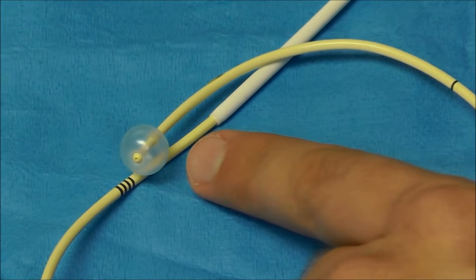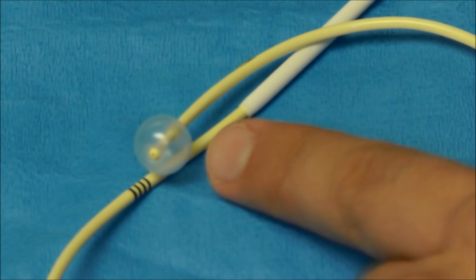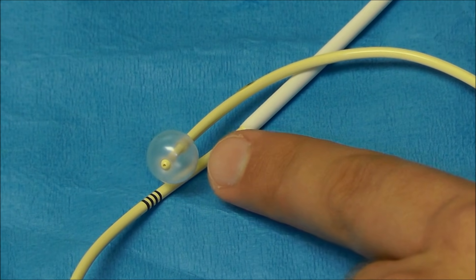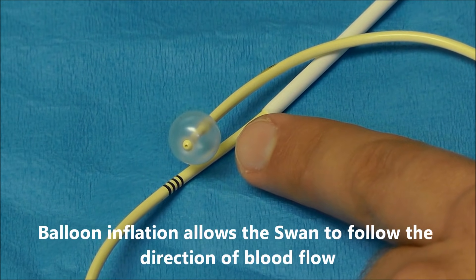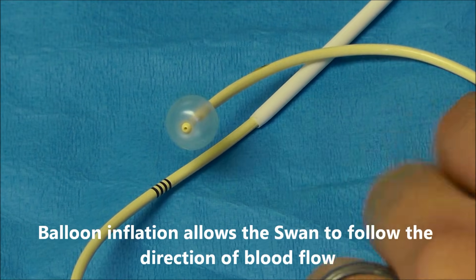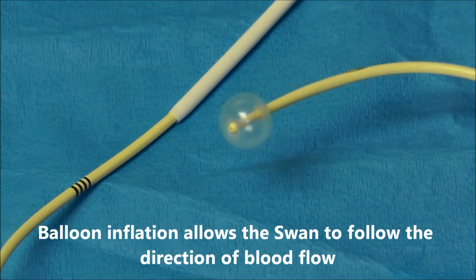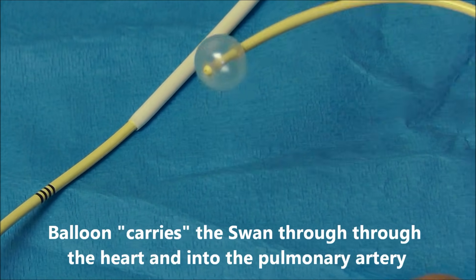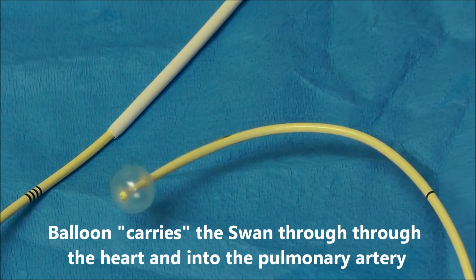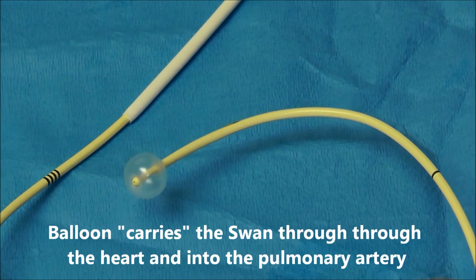This balloon acts kind of like a sail on a sailboat because when this balloon is inflated, it follows the direction of the blood flow. And so assuming that this catheter is not coiling up, the blood flow should guide this from the right atrium into the right ventricle and into the pulmonary artery.